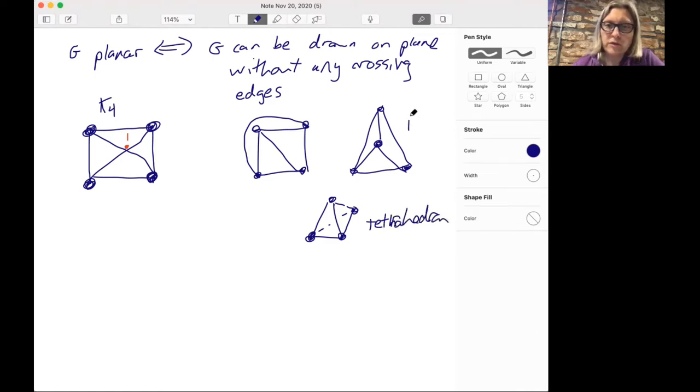Okay, so this version here is planar, and so we say that K4 is planar, even though sometimes we've drawn it so that it has edges crossing.